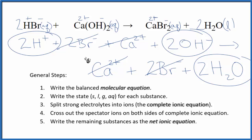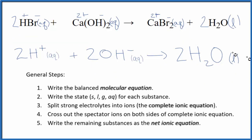Let me clean this up and write the states in, and we'll have our net ionic equation. So this is the net ionic equation for hydrobromic acid plus calcium hydroxide.